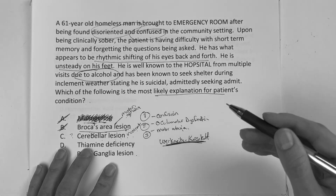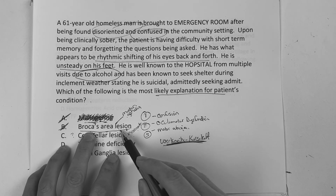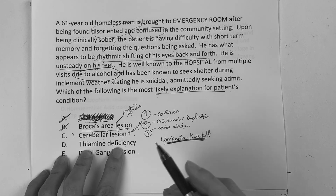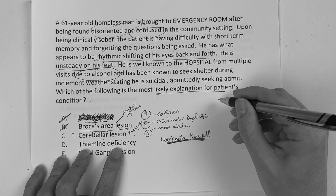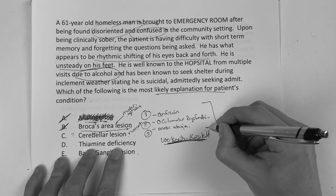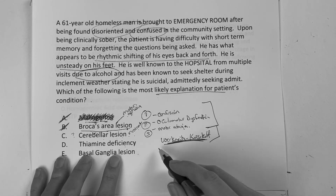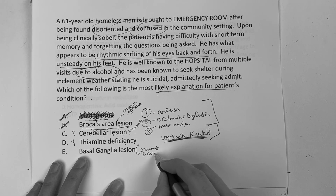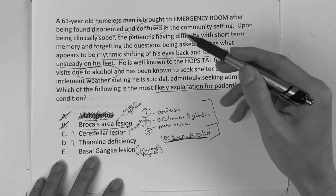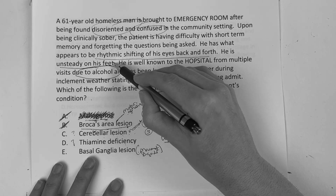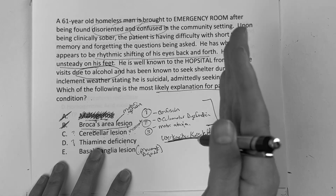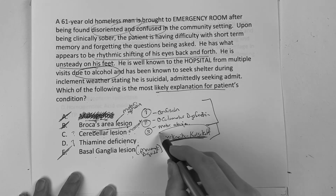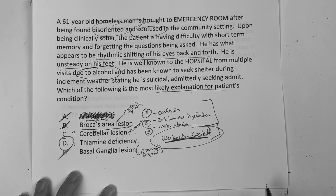Thiamine deficiency — we always talk about how with alcoholics there's a thiamine issue. If you have a thiamine deficiency it can potentially lead to, over time in this chronic alcoholic, Wernicke-Korsakoff. So I like that one. Basal ganglia lesion is more of the movement disorder. He has pieces of that — he's unsteady on his feet — but he's got these other issues. The rhythmic shifting of his eyes back and forth cannot be explained by a basal ganglia lesion. So when I'm down between cerebellar and thiamine, this guy is an alcoholic — I've got to be jumping all over thiamine deficiency.